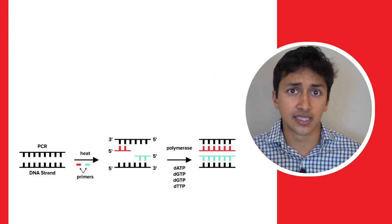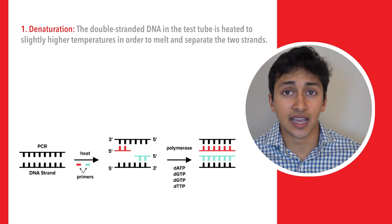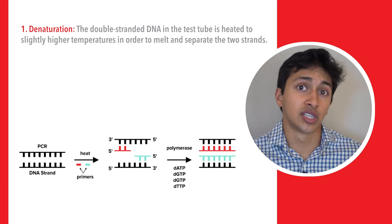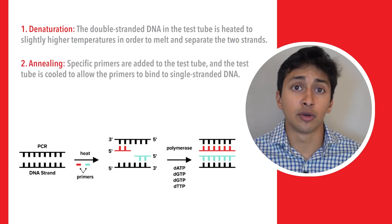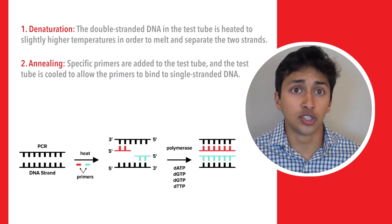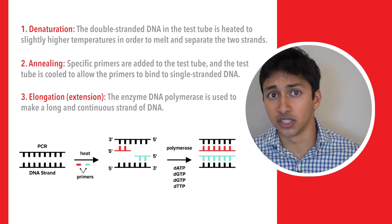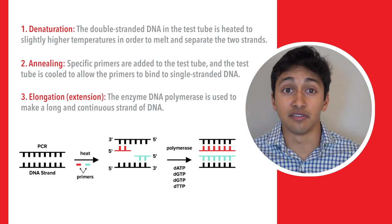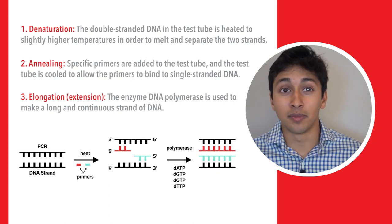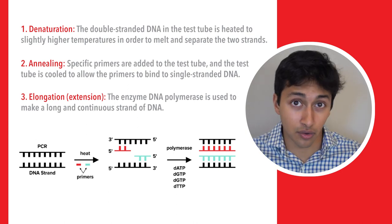So to recap, there are three distinct steps in the PCR process. Step one, denaturation: the double-stranded DNA in the test tube is heated to slightly higher temperatures in order to melt and separate the two strands. Step two, annealing: specific primers are added to the test tube and the test tube is cooled to allow the primers to bind to single-stranded DNA. And step three, elongation or extension: the enzyme DNA polymerase is used to make a long and continuous strand of DNA. After these three steps, the end result is two identical copies of the same DNA sequence, and the steps can be repeated to yield four identical copies, and so on.